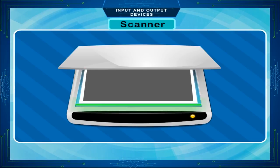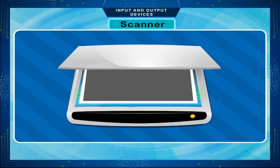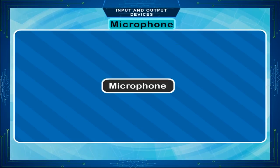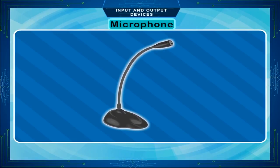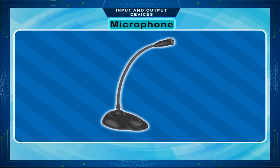Scanner. It is an input device which is like a photocopy machine. It is used to input any printed picture or document into the memory of the computer. Microphone. A microphone is used for recording the voice or other sounds into the computer.